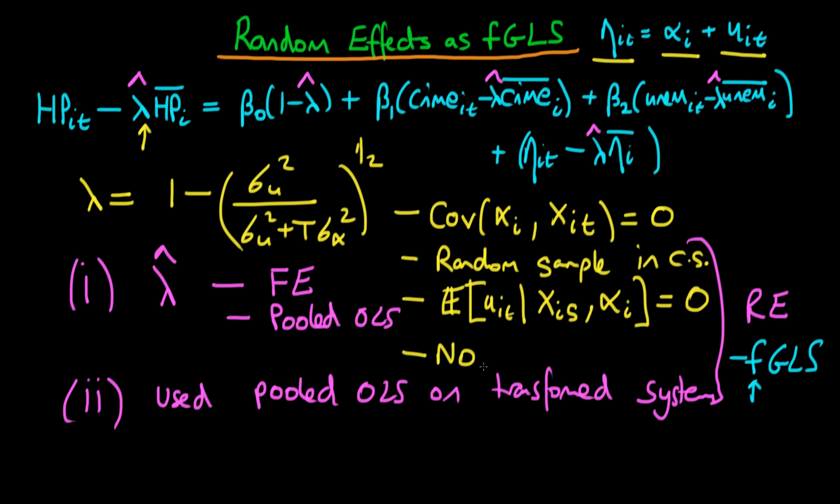And then finally we need the assumption of no perfect collinearity, and that sort of really should go without saying because of the fact that we know that if we have perfectly collinear regressors that we're not going to be able to estimate our model via random effects, fixed effects, or just ordinary least squares. We can't even estimate that type of model.